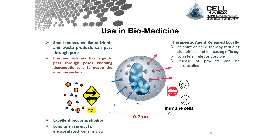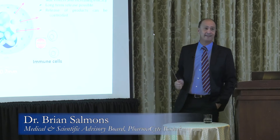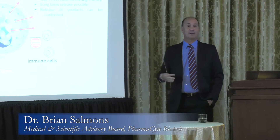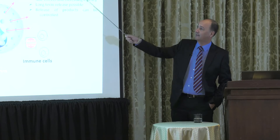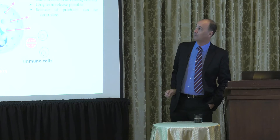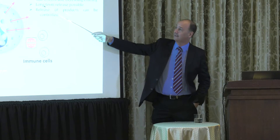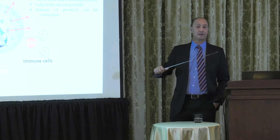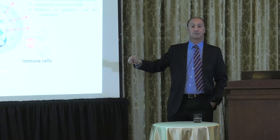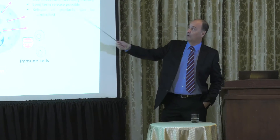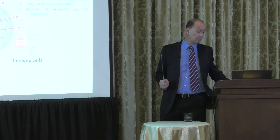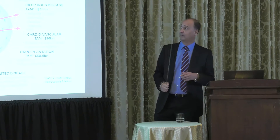Whatever the cells can produce is released, and this is usually the therapeutic agent. By implanting them at the site where you would like the production, you can then target that therapeutic to where you need. Using cells in a bead allows you to have long-term, continuous production of your therapeutic, and you can, if you want, control the release of the products within those beads.